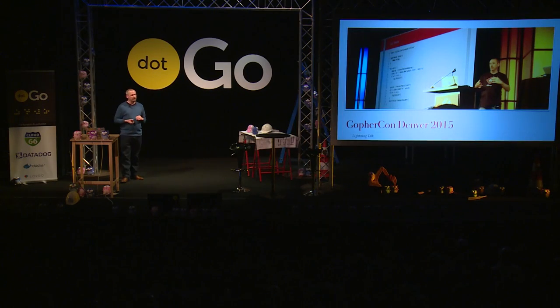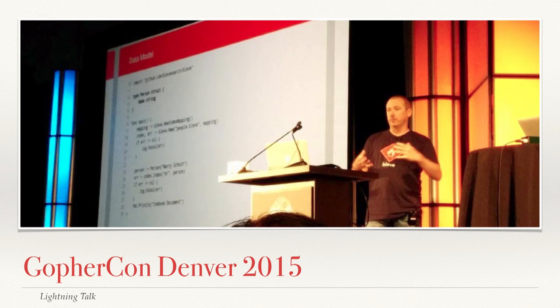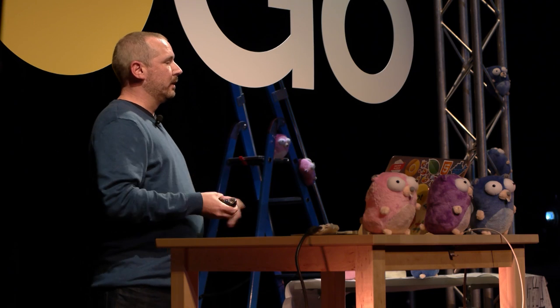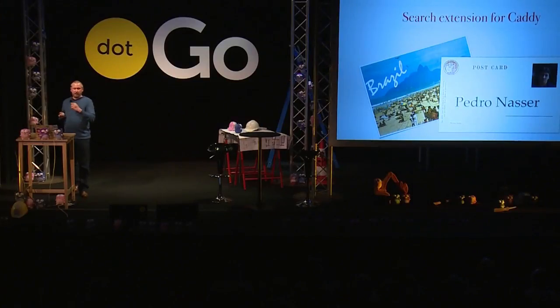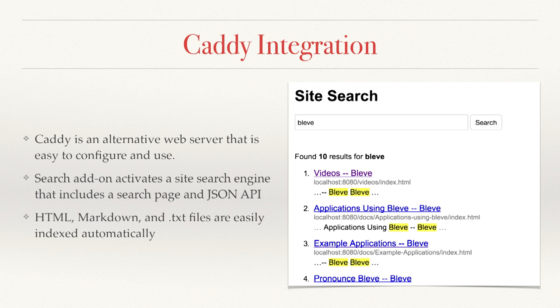Next on our tour, we went to GopherCon Denver and gave a lightning talk. We thought, what could we do that would excite people? So we built something we call Hugo site integration. Hugo is a static website generator built in Go, and a lot of people build their sites and host them using it. We thought, what if we added an easy way to use Go to search your Hugo site? So we built some integration and unveiled this at GopherCon — and the cool thing was the GopherCon site itself was built using Hugo, so we were able to demo the GopherCon site searchable with Blovie. Just a few weeks ago I got a notification that Pedro Nasser in Brazil has added support for searching Caddy using Blovie. This is really awesome to us because people are taking Blovie and not just contributing back to Blovie itself, but enhancing their own applications with Blovie.